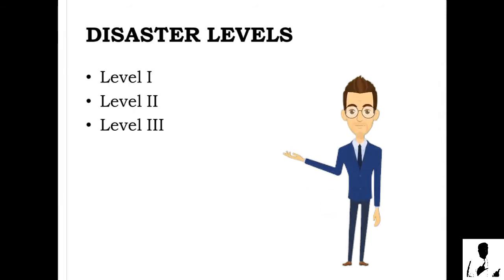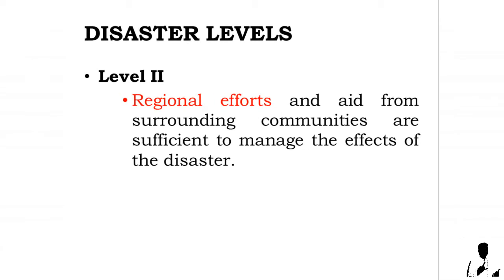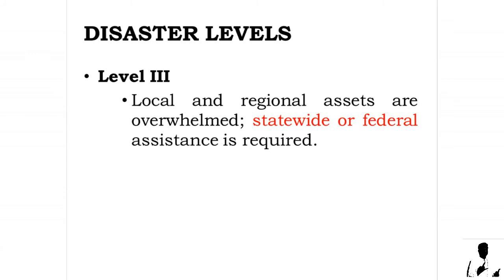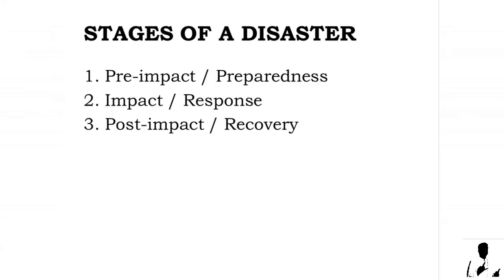Disasters are often classified by the resultant anticipated necessary response into three levels. Level 1: local emergency response organizations can contain and effectively manage the disaster and its aftermath. Level 2: regional efforts and aid from surrounding communities are sufficient to manage the effects of the disaster. Level 3: local and regional assets are overwhelmed and statewide or federal assistance is required.